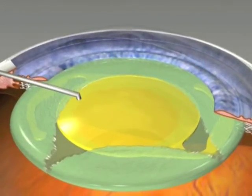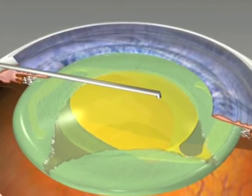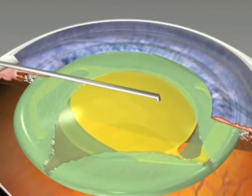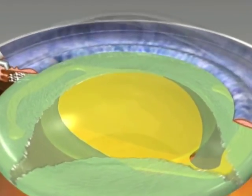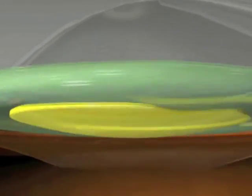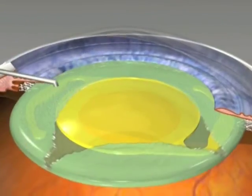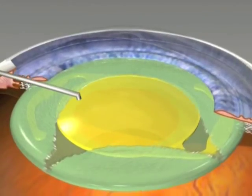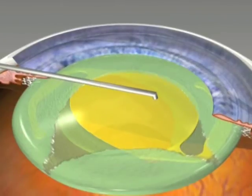Posterior capsule rexus with posterior optic capture can be used when the lens is in the bag but there's anterior capsule tears making long-term centration and fixation of the lens uncertain. But the posterior capsule rexus with optic capture will make sure that lens is stable and central permanently.